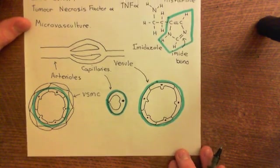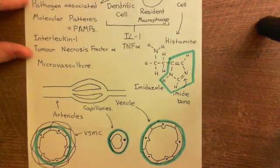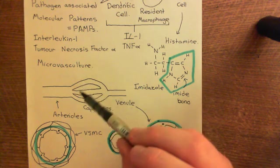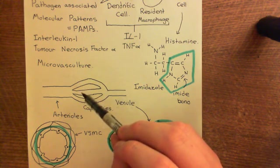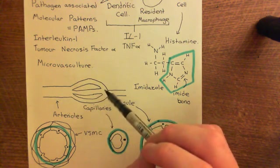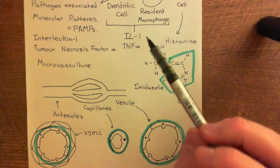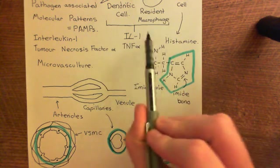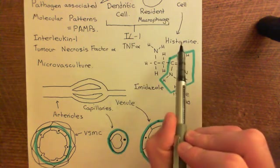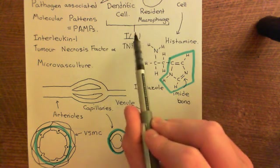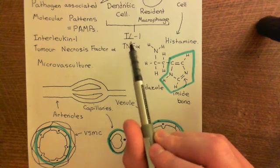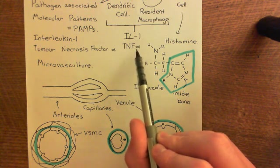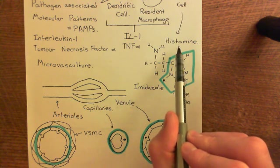These pro-inflammatory mediators — interleukin-1, tumor necrosis factor alpha, and histamine — are going to come and act on endothelial cells in these blood vessels and trigger the acute inflammatory response. These three different pro-inflammatory mediators trigger different responses in the endothelial cells.